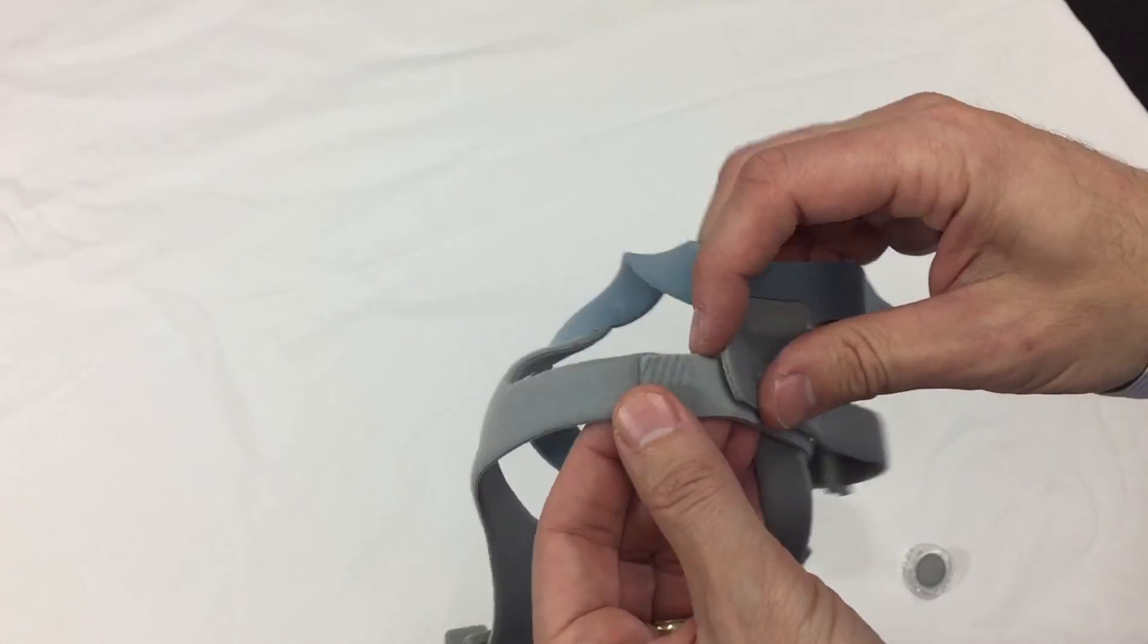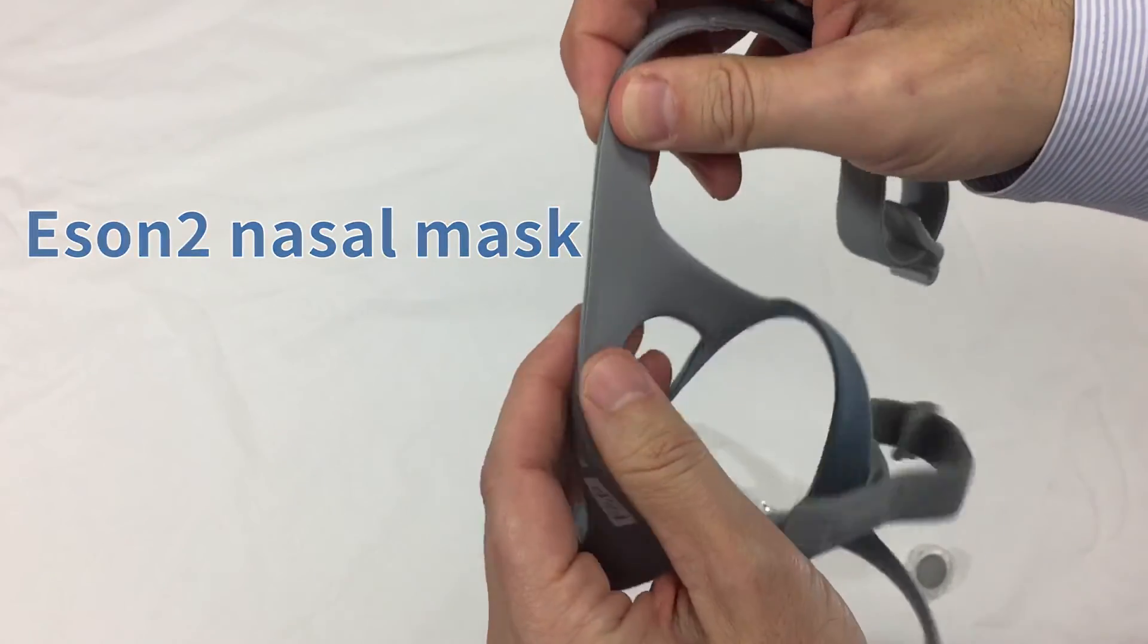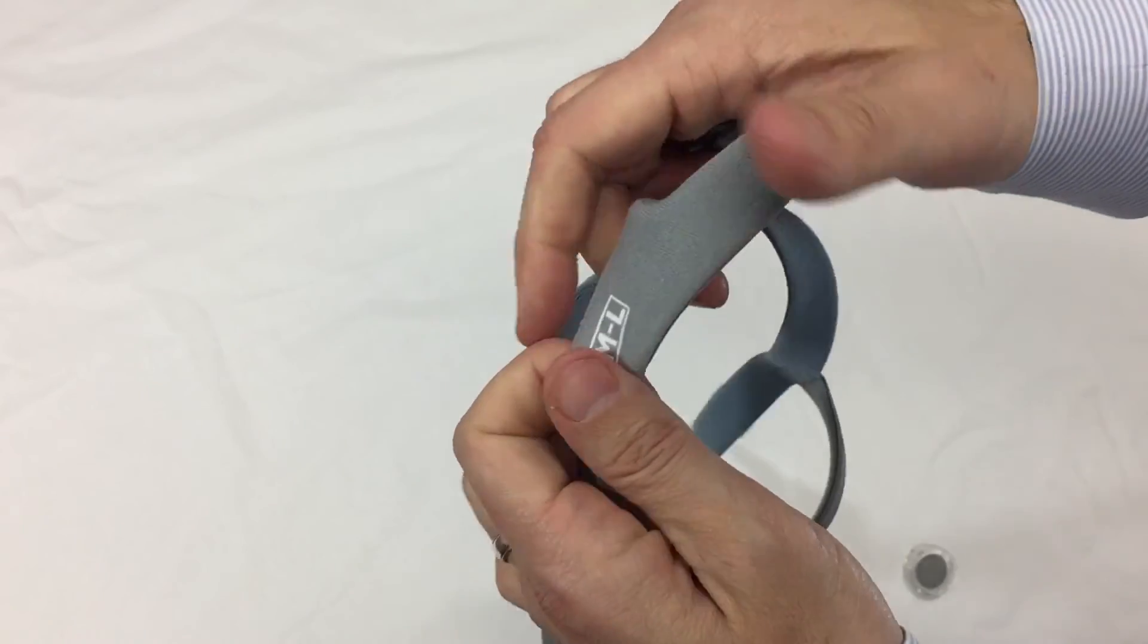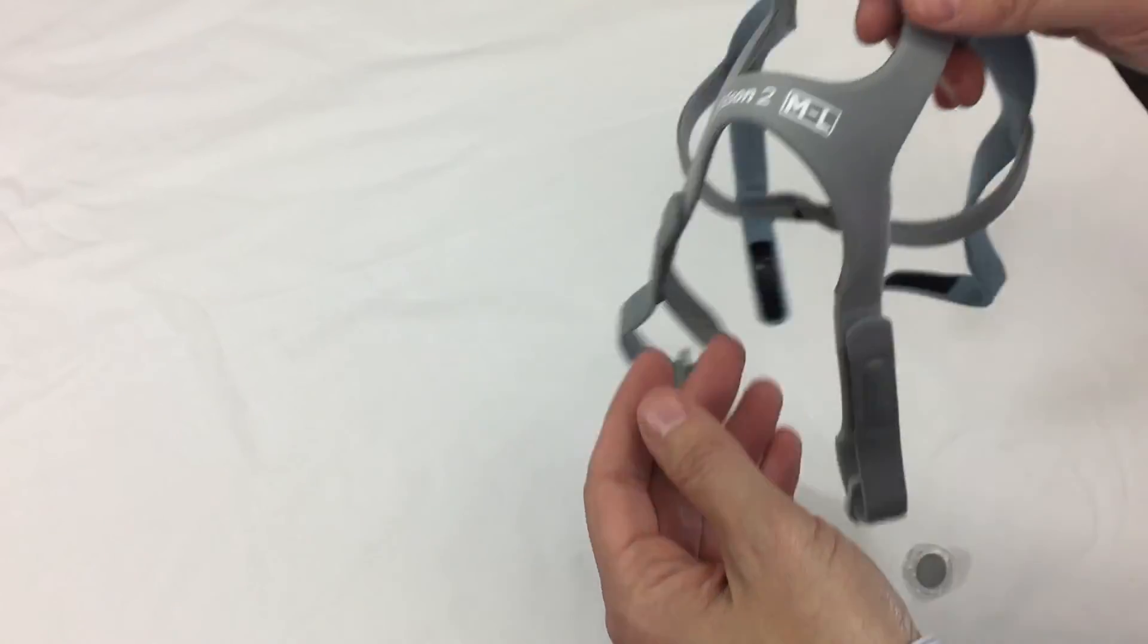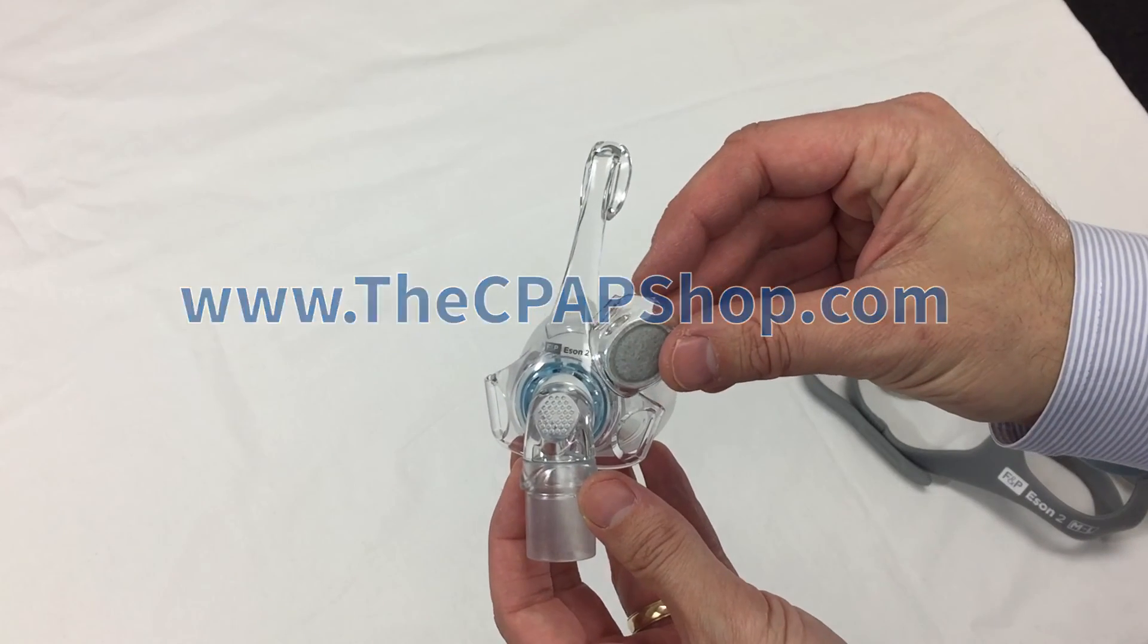And the new Fisher Paykel Isan 2 mask is available on our website. As well as CPAP machines and supplies. And that website is www.thecpapshop.com.